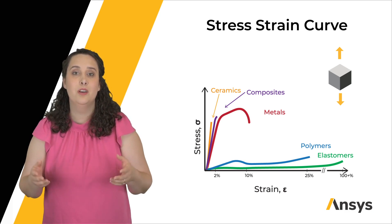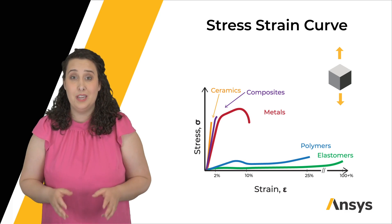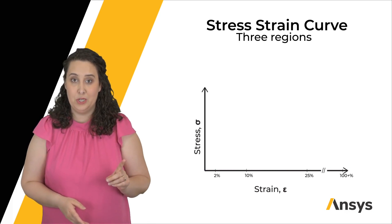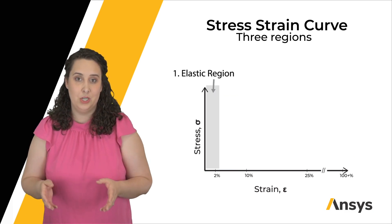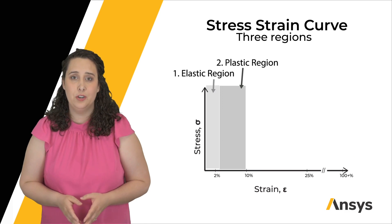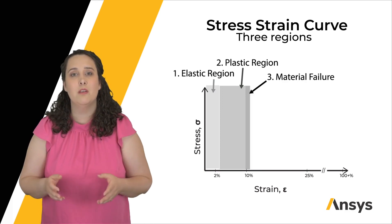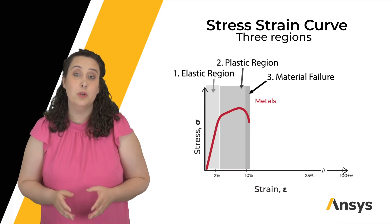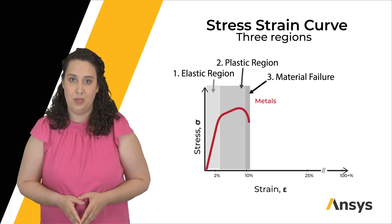While all materials react differently in the presence of stress, we can generally label three areas of our stress-strain curve. Our elastic behavior region at the beginning, then we enter some plastic region where I have permanent deformation occurring, and finally material failure. Once again, metals as a case example fit this curve the best, but these three regions are important to consider for all materials when talking about mechanical behavior.